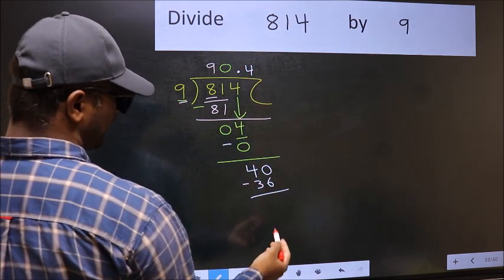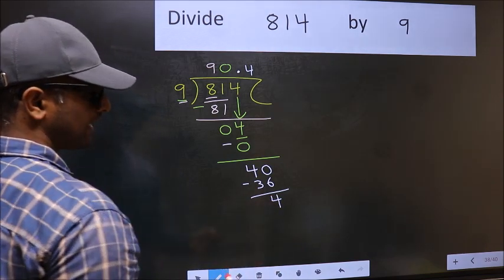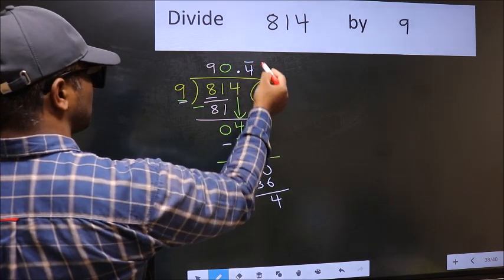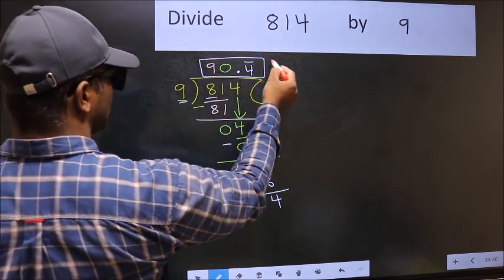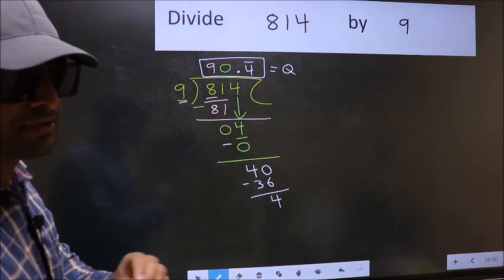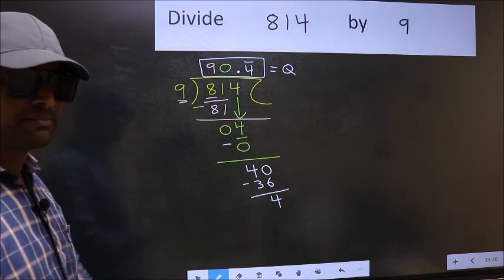Now you should subtract. We get 4. We got 4 again. That means we get bar on this number. So this is our quotient. Did you understand where the mistake happens? You should not do that mistake.